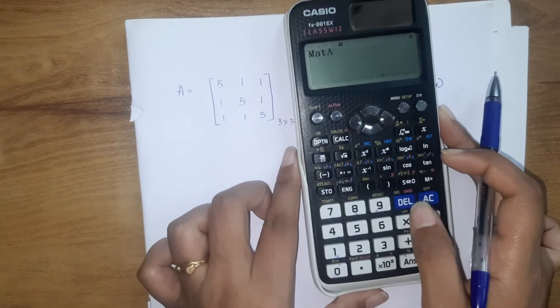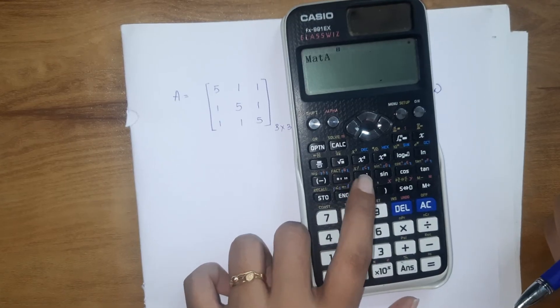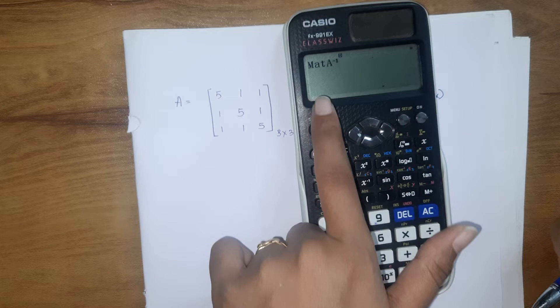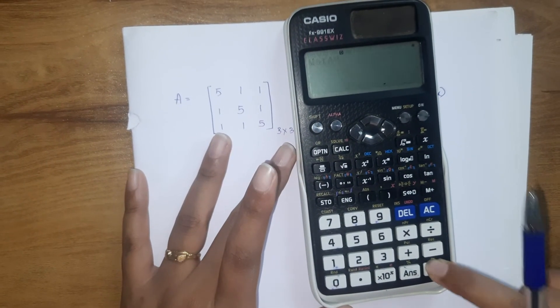So where do we see inverse? Here, right? This is x inverse, x power minus 1. So click on this. You got matrix A power minus 1. That's what we want. Press equals.